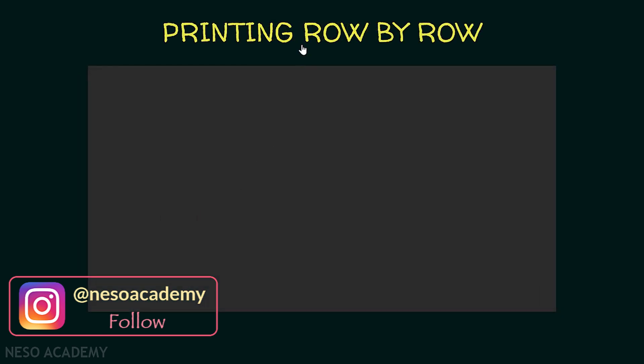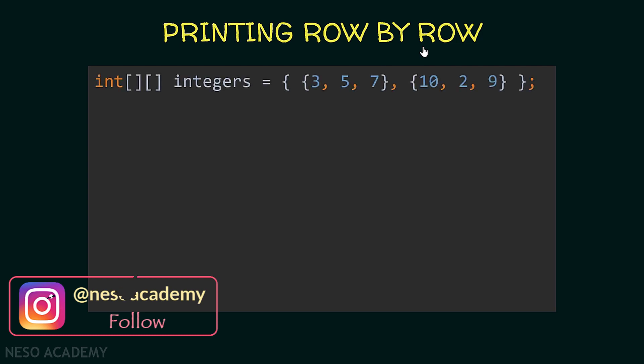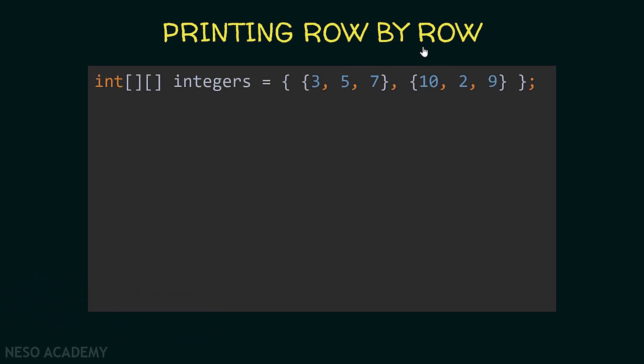Let's get started by printing row by row. Suppose that we have this array — it is a two-dimensional array, an array that contains two arrays. So what we want to do is to print this array row by row. In other words, we want to print three, five, seven and then ten, two, nine. So obviously we want to use loops.